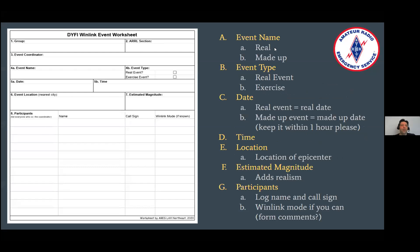A couple of exercise suggestions. Here is a Winlink event worksheet that we set up. You can just fill it out — your group, your ARRL section, who your event coordinator is, an event name. If it's an exercise, come up with a snazzy name — it always helps and makes it more fun. Then tick the box: is it a real event or is it an exercise event?